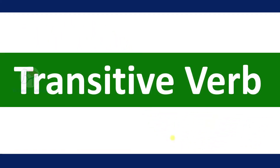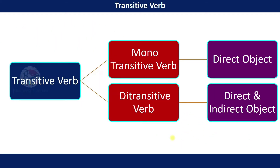Transitive verb is divided into two parts: monotransitive verb, which has only one object — a direct object — and ditransitive, which has two objects: a direct and an indirect object.